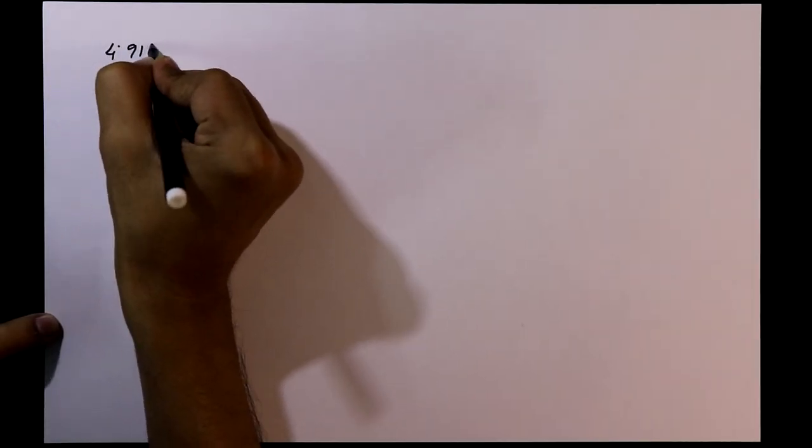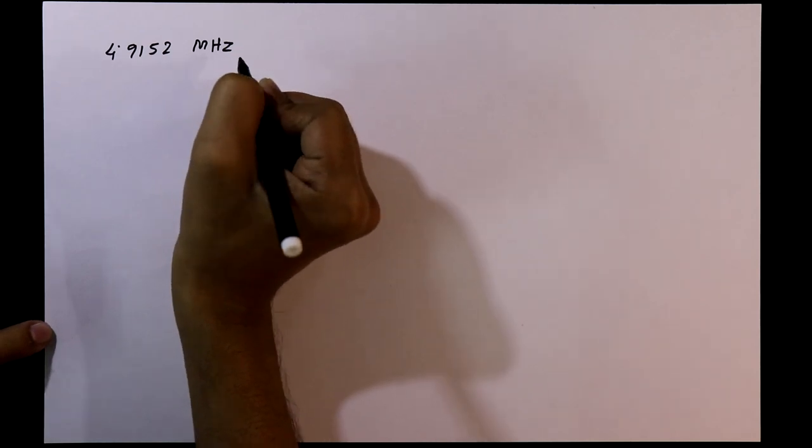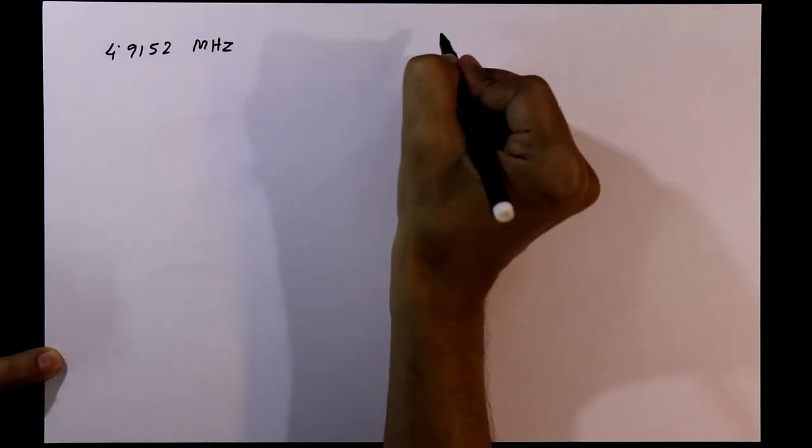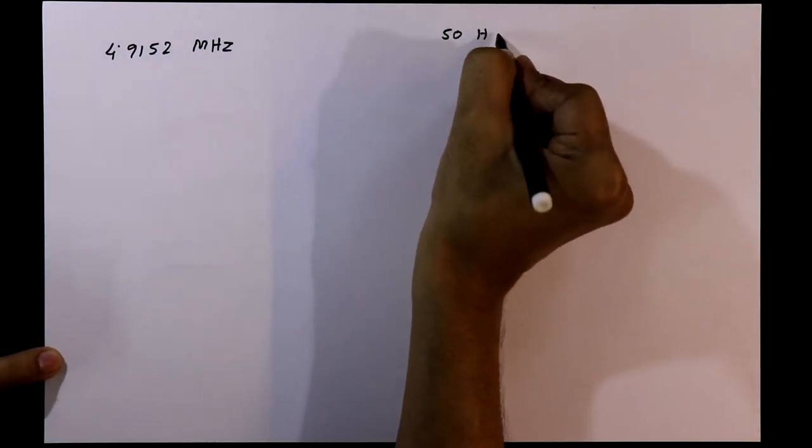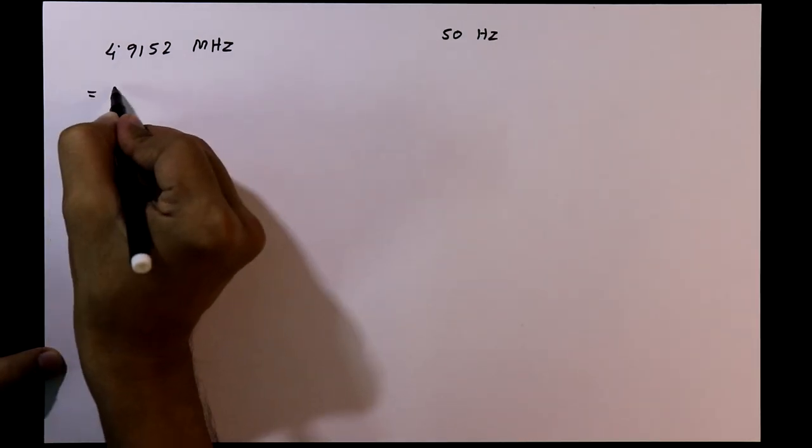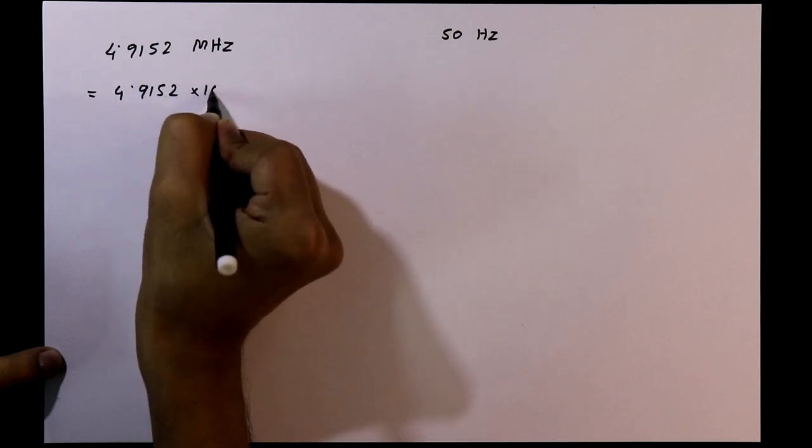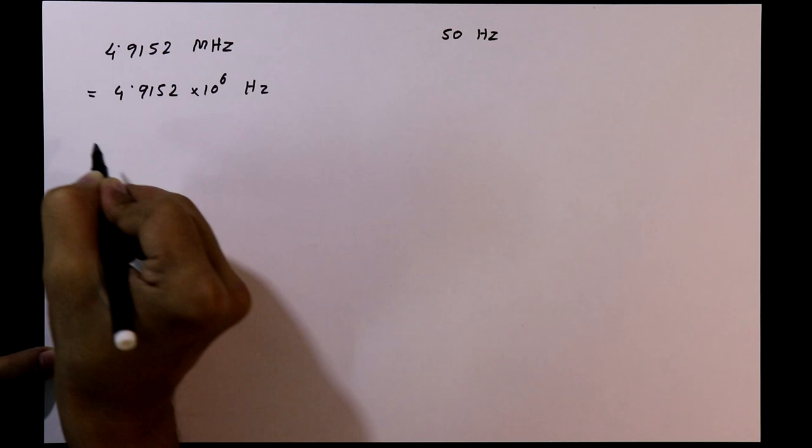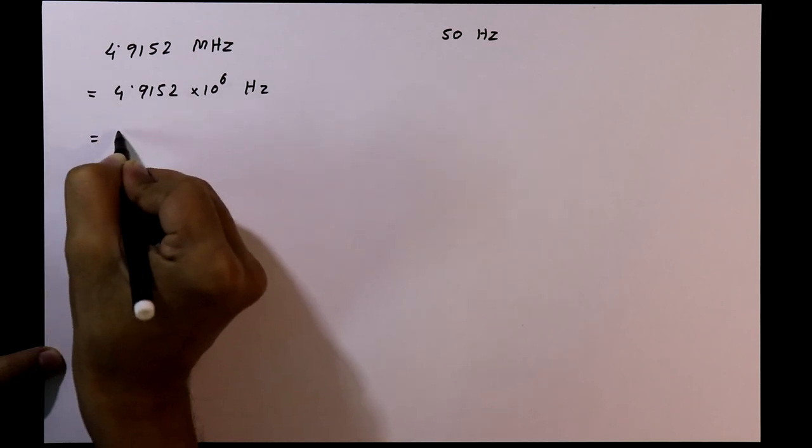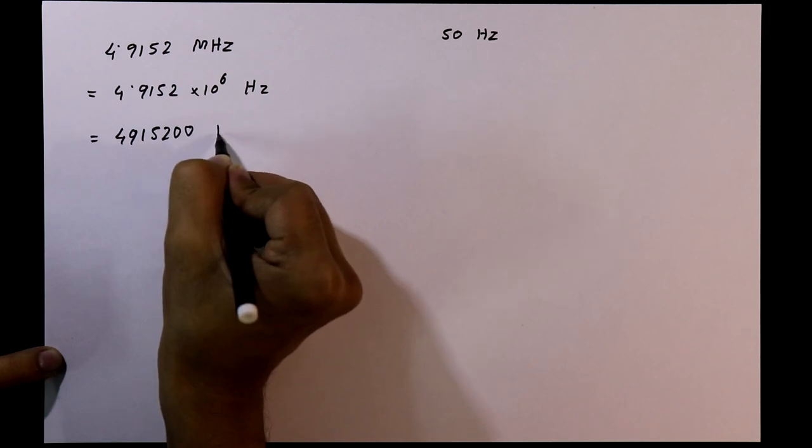We will use 4.9152 MHz crystal oscillator and we need output frequency of 50 Hz. This we can write as 4.9152 multiplied by 10 to the power 6 Hz, so this one is equal to 4915200 Hz.